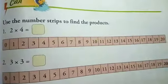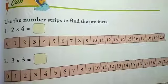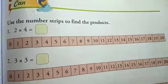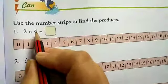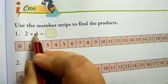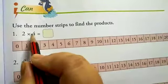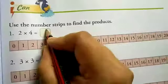Page number 89. Use the number strip to find the product. 2 into 4. 2 into 4, multiplication: 2 times 4 is 8.